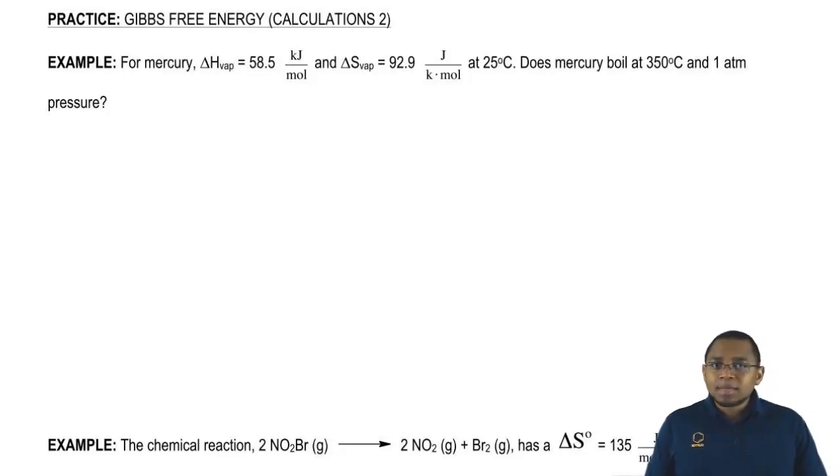This question is similar to something we've seen earlier. What I'm really asking you for is calculating the normal boiling point of mercury. If we can find out the normal boiling point of mercury, we can see if this temperature is high enough for mercury to begin to boil.